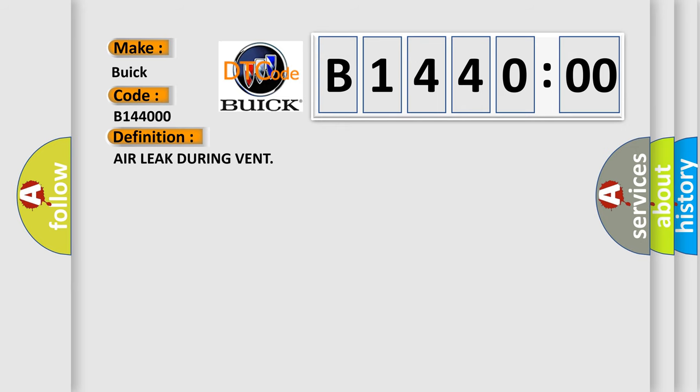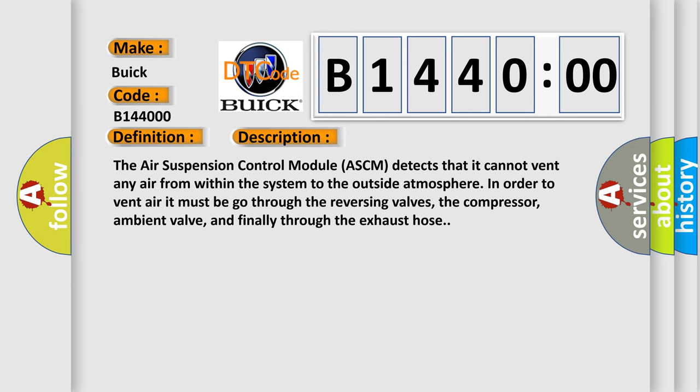And now this is a short description of this DTC code. The air suspension control module ASCM detects that it cannot vent any air from within the system to the outside atmosphere. In order to vent air, it must go through the reversing valves, the compressor, ambient valve, and finally through the exhaust hose.